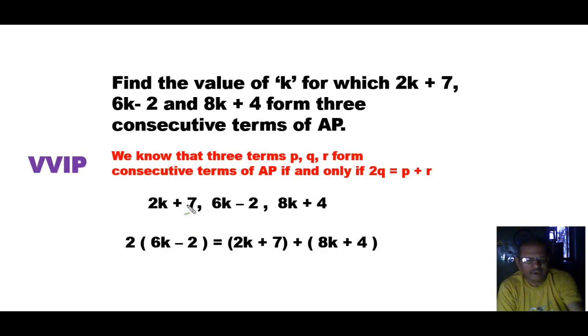Here on the left hand side we will multiply by 2 inside the bracket. So 2 into 6k, that will be 12k, and 2 into 2, that will be 4. So it will be 12k minus 4.